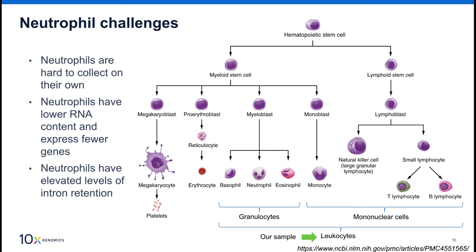This figure shows the fates of hematopoietic stem cells. At the bottom right we can see a bracket showing what we are capturing in our sample. Neutrophils are hard to capture on their own — this is something to be aware of in our analysis. In addition to neutrophils, we're going to need to deal with a number of other cell types. Neutrophils also have lower RNA content and express fewer genes, which will become clear as we learn more about the raw data processing pipeline. Neutrophils also have elevated levels of intron retention, which is also going to affect our analysis approach.